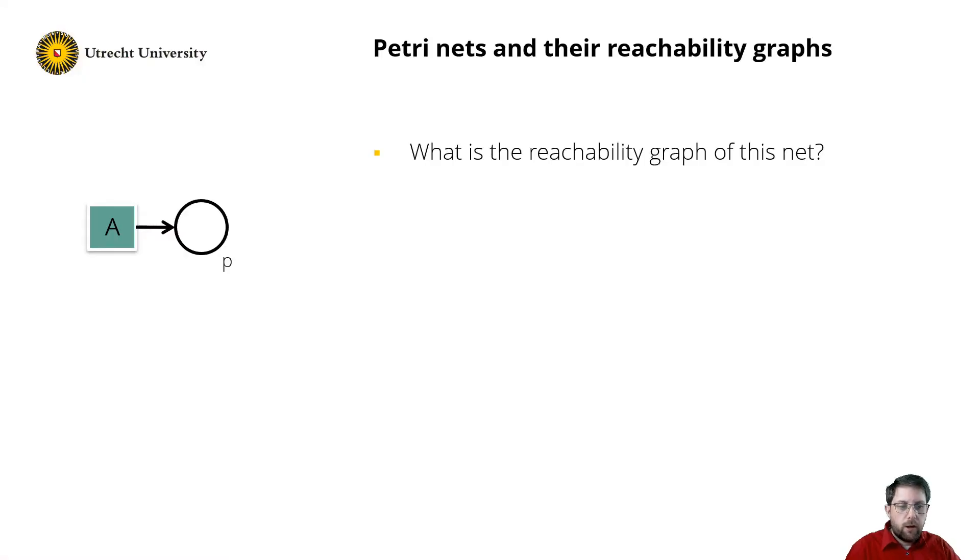To start, consider this Petri net on the left. What is its reachability graph? Of course the start is very simple, as there are no tokens, the initial state is the empty marking, and we can model it like this.